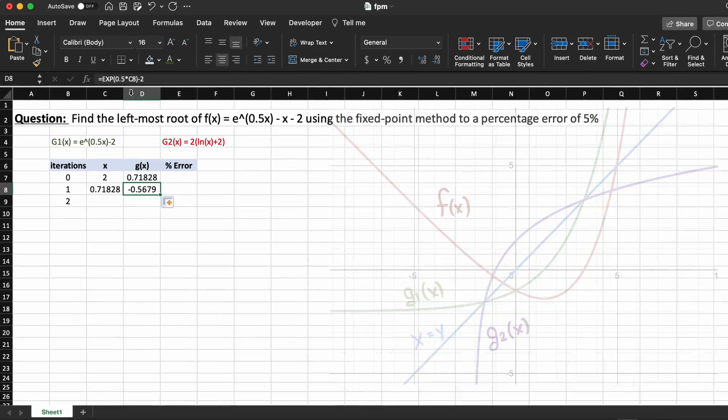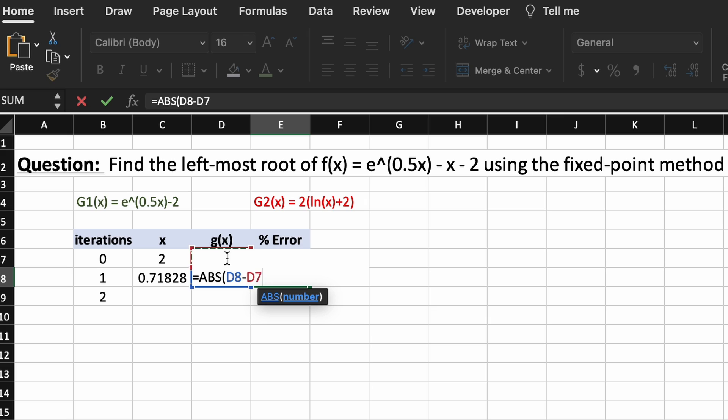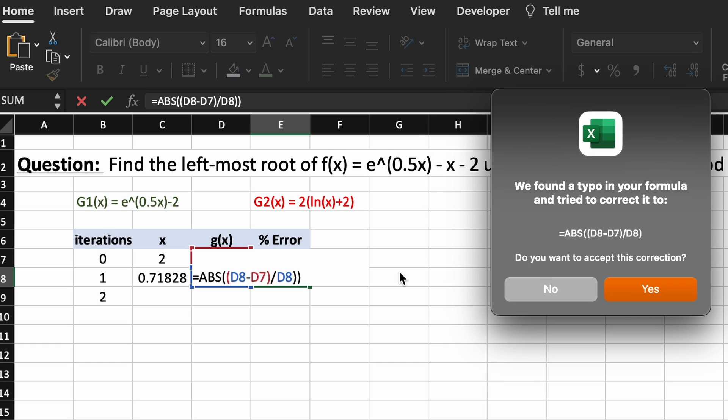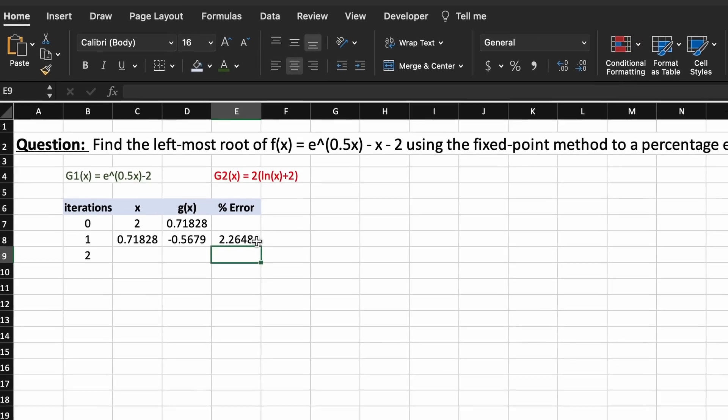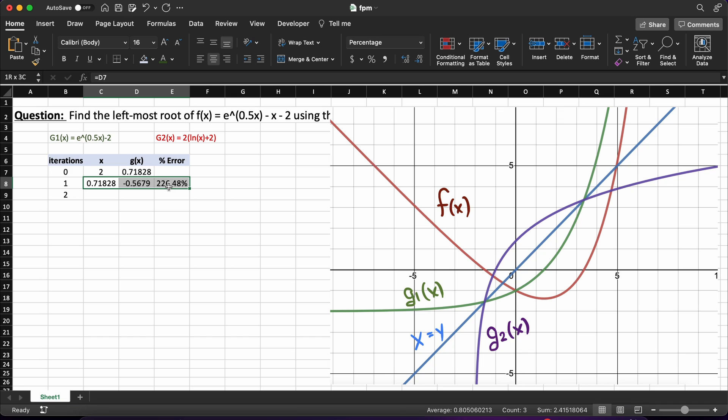Now, we can also add in our percent error by taking the absolute value of our current x value minus our previous x value divided by our current x guess. Then I'm just going to set all these cells to percentages. And as you can see here we have an initial percent error of 226%.